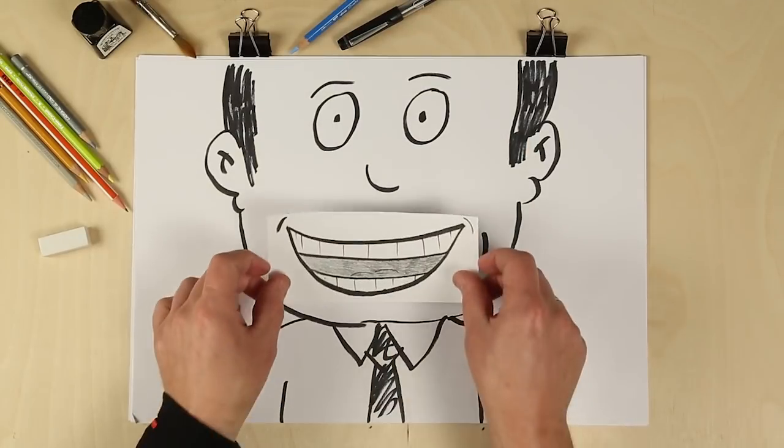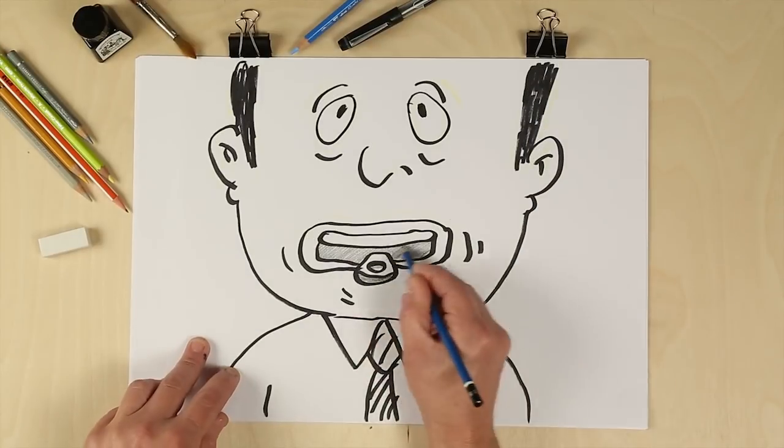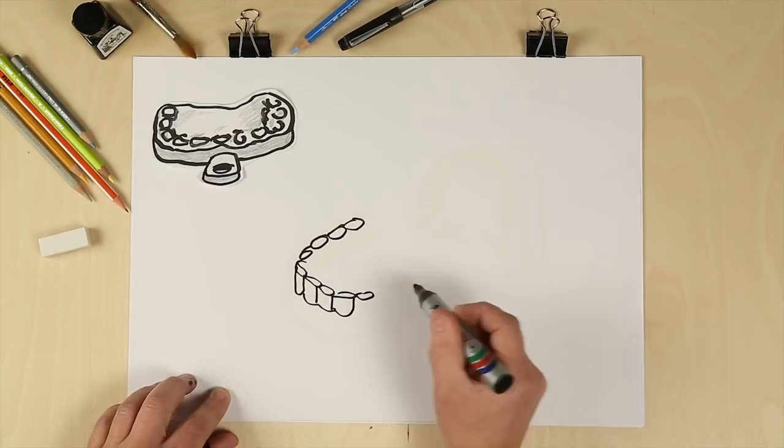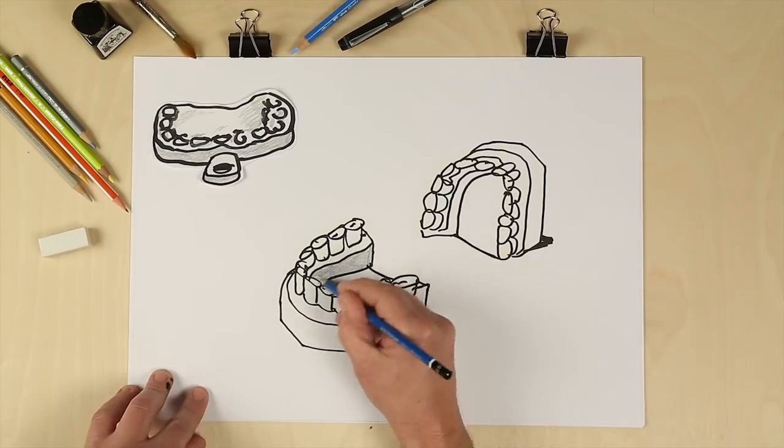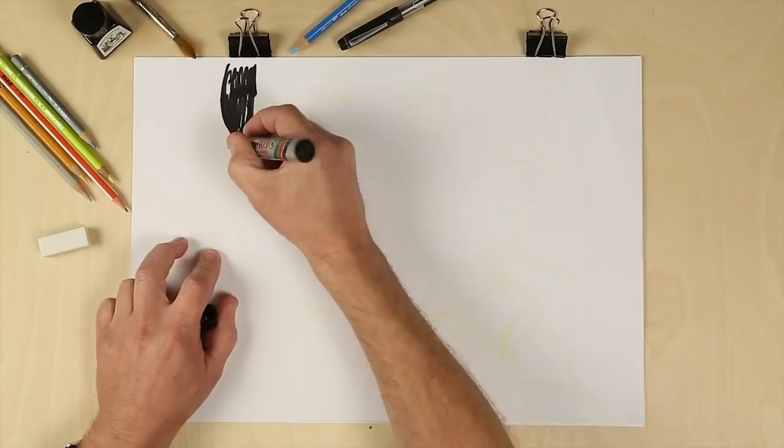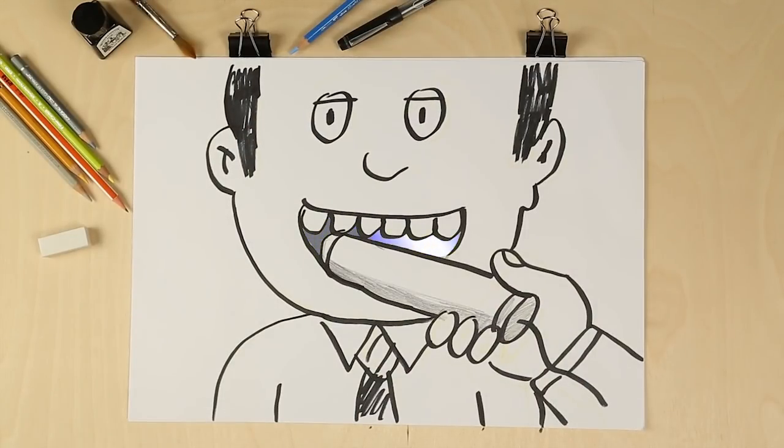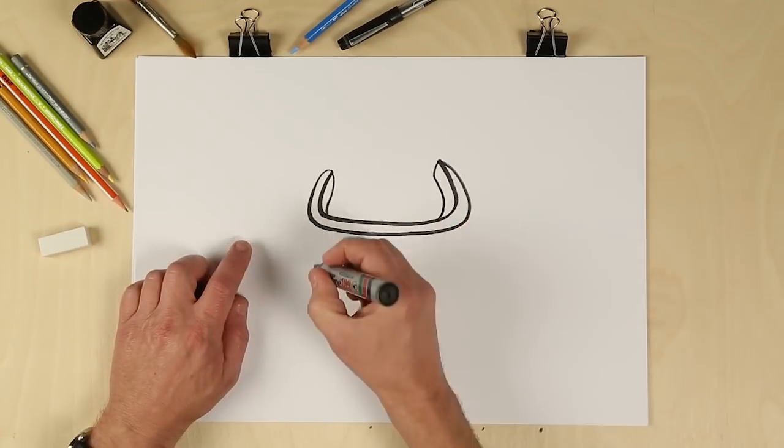Every orthodontic appliance used to start with a physical impression that we use to create plaster stone models. With digital orthodontics, instead of uncomfortable impressions, we take a 3D scan at the computer.